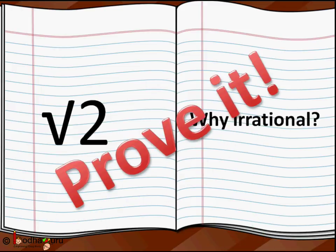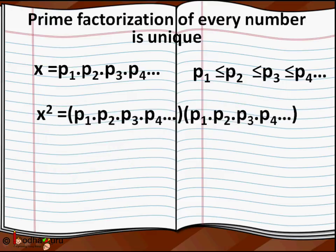Let's get the proof. We know every composite number can be expressed as a product of prime numbers, and this factorization is unique.